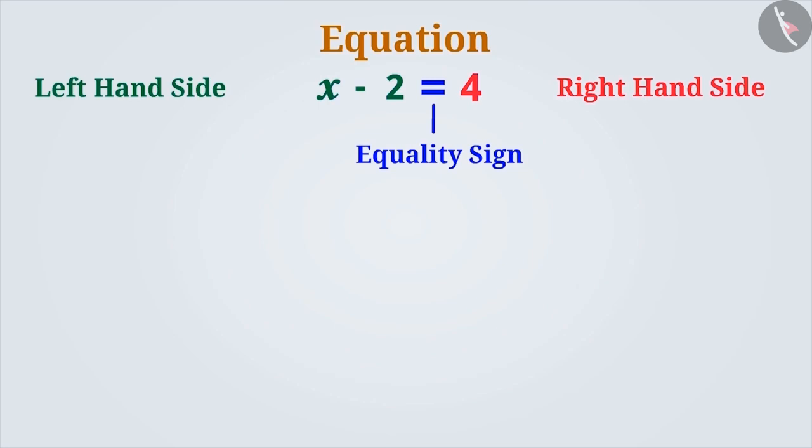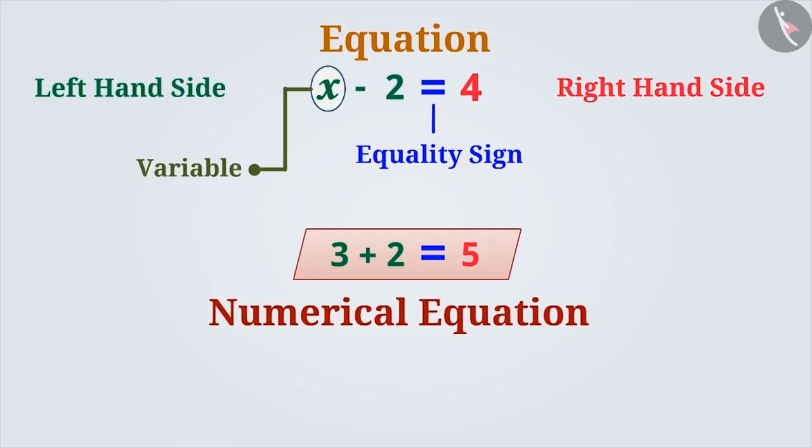It is not necessary that there should be a variable in every equation. Equations that contain only fixed numbers are called numeric equations. For example, 3 plus 2 is equal to 5. The term equation is generally used only for equations with variables.